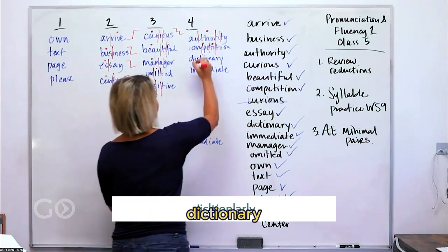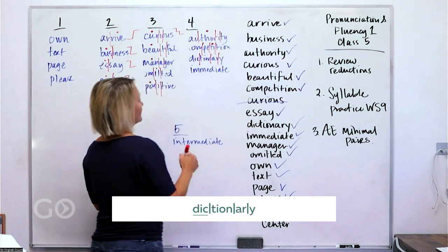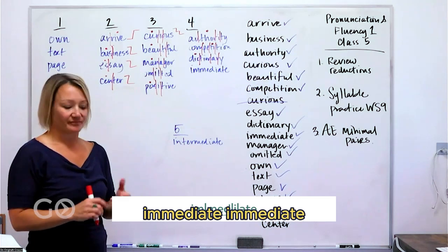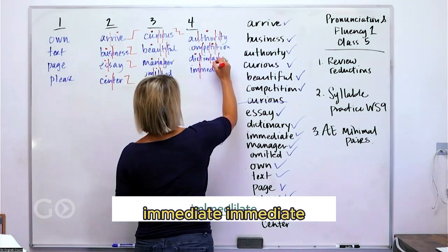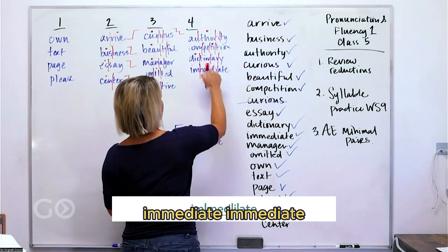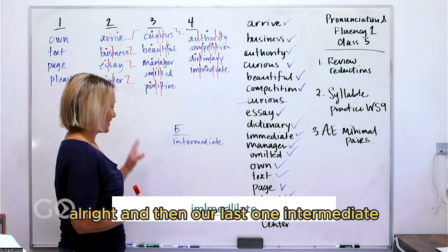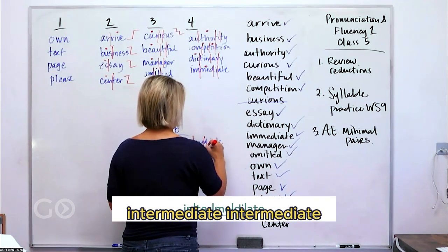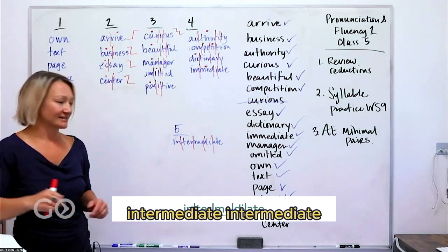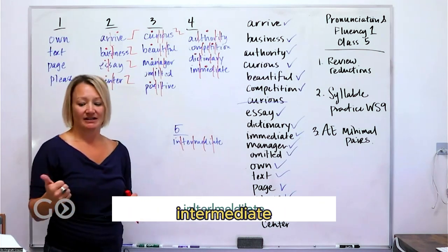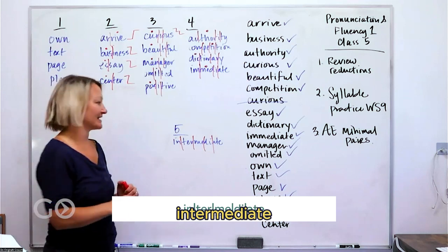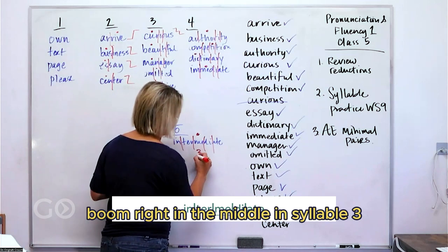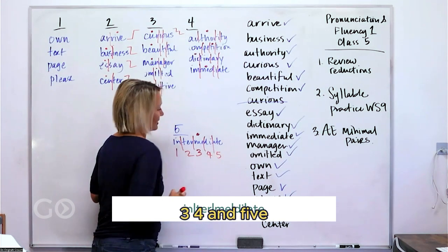Dictionary. Dictionary. Stress is here. Immediate. Immediate. Immediate. It's in the stresses right there. All right. And then our last one. Intermediate. Intermediate. Where do you hear the stress there? Intermediate. Boom. Right in the middle. In syllable three. We've got one, two, three, four, and five.